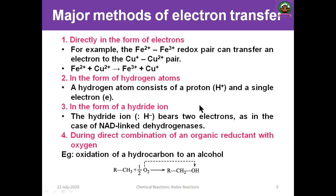The second method is transfer in the form of a hydrogen atom. As you know, a hydrogen atom consists of a proton and a single electron. So when a hydrogen atom is transferred, the receiving species gets both the proton and an electron.